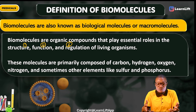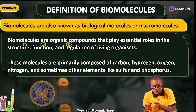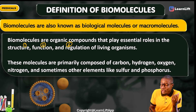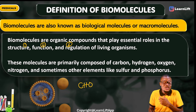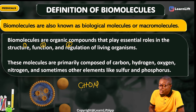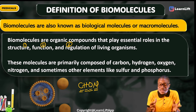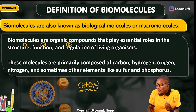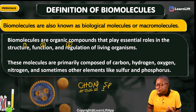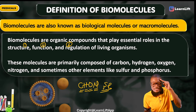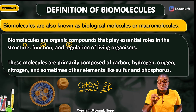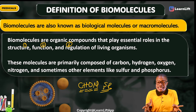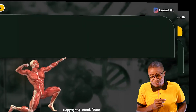These molecules that we call biomolecules are primarily composed of carbon — and of course you know that in organic chemistry, organic compounds contain carbon. The key elements are C-H-O-N: carbon, hydrogen, oxygen, and nitrogen. These are the four major elements, and sometimes elements such as sulfur and phosphorus also present themselves. So: carbon, hydrogen, oxygen, nitrogen, sulfur, and phosphorus — these elements are the main things that make up your biomolecules.